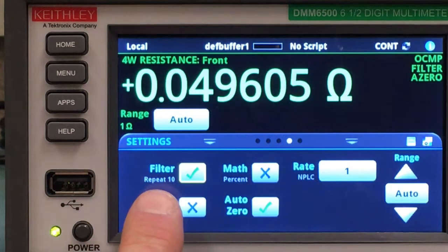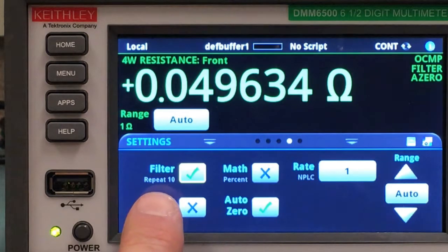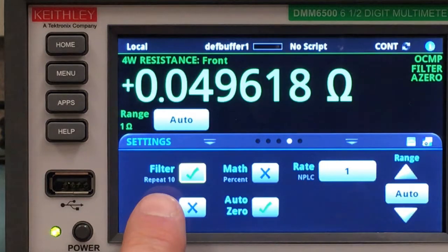You might be able to see in the text down here that we have a 10-sample filter applied. It's a repeating filter, so it will capture 10 readings and then give you an update.